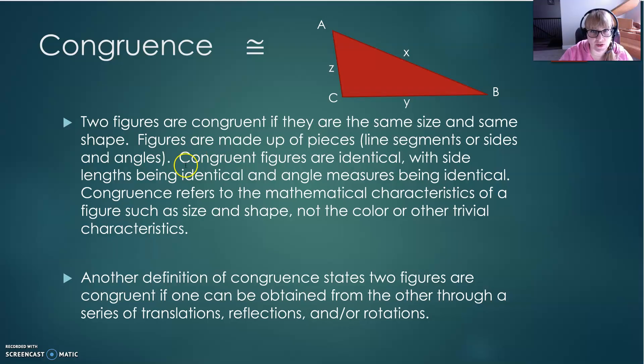Another definition of congruence, and this is the most important one, is that congruence states that two figures are congruent if one can be obtained from the other through a series of translations, reflections, and or rotations.